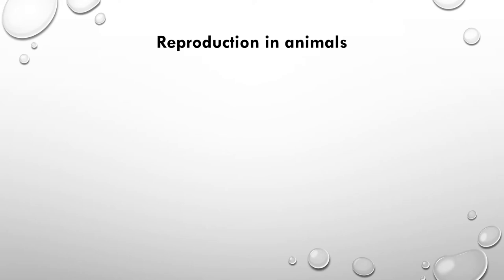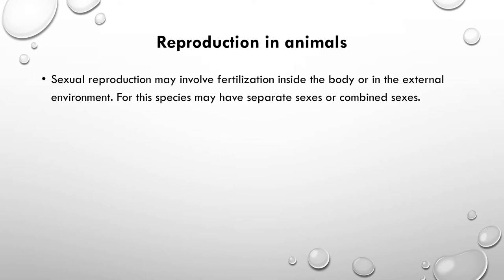Now let's see how reproduction occurs in animals. In animals, you can also observe both sexual and asexual reproduction. For sexual reproduction, it occurs in two main ways: the first type is internal fertilization, where fertilization occurs inside the body of the female organism, and the other type is external fertilization, where fertilization occurs in the external environment.